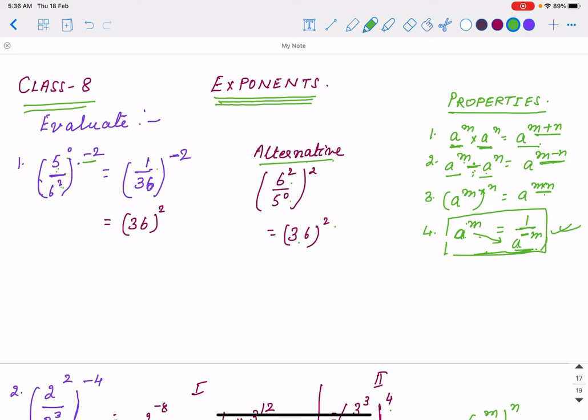So what we do: first we simplify. 5 to the power 0 is 1, 6 square is 36, minus 2 power is there. So if we change denominator to numerator, power sign will change, so it is 36 square.